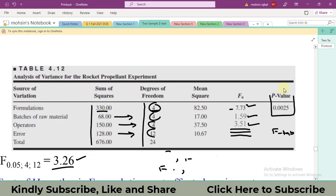Now how will we take the decision? Our rejection criteria is that if our calculated value or F naught value is greater than this critical value or tabulated value. So let me write it: this is F naught value and this is F critical value. So in case if F naught is greater than F critical, we reject our null hypothesis.